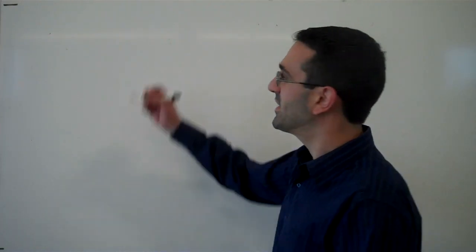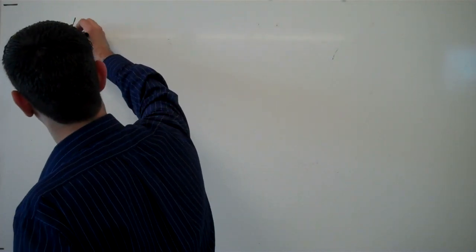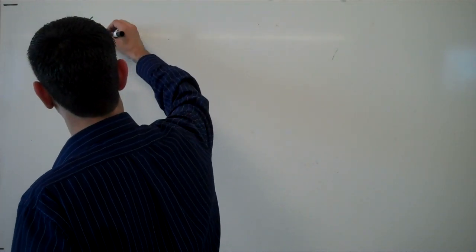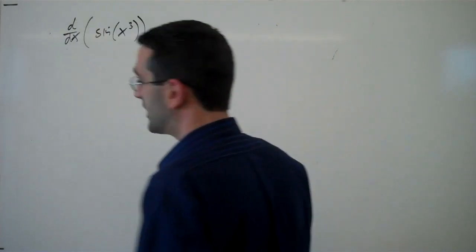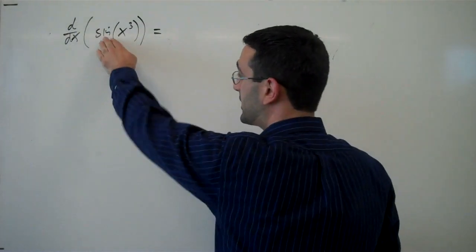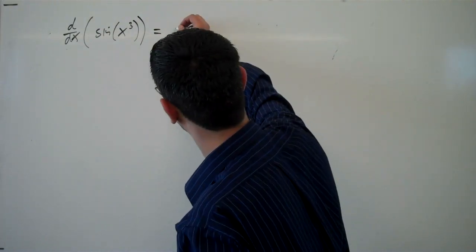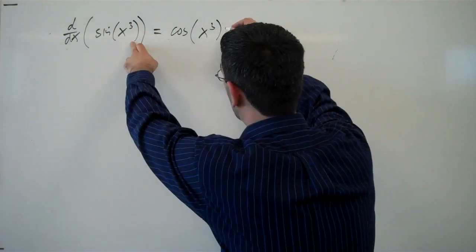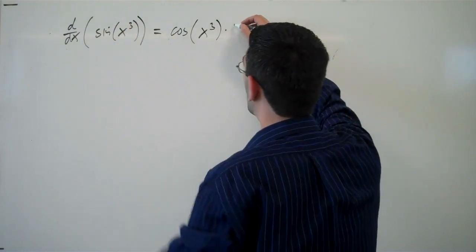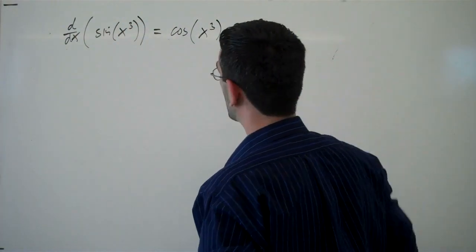You may recall from derivatives that we had the chain rule. For example, if we took the derivative of sin(x³), we would get the derivative of the outside function, the derivative of sine, which is cosine, evaluated at the inside function, and then chain rule times the derivative of that inside function.